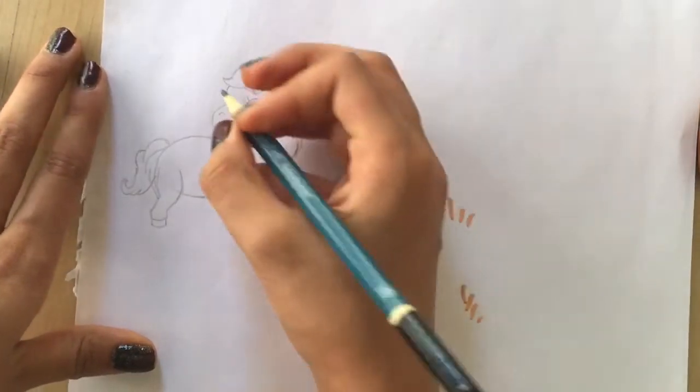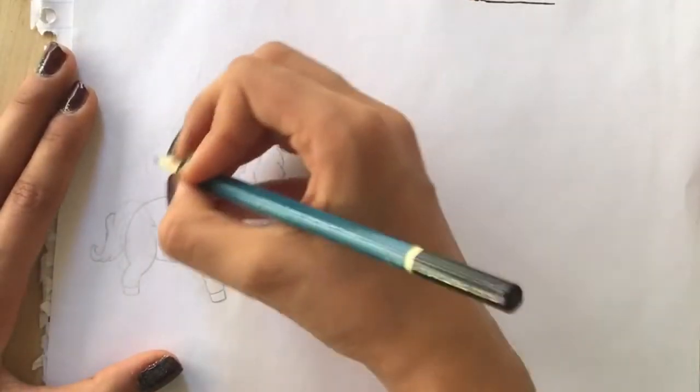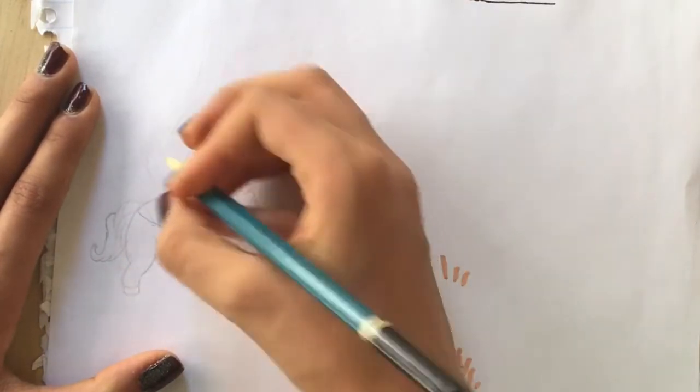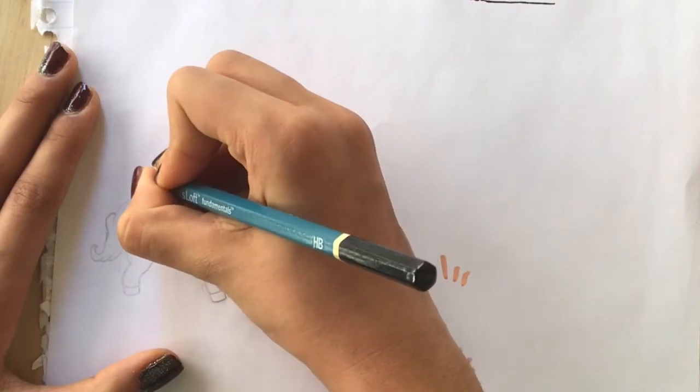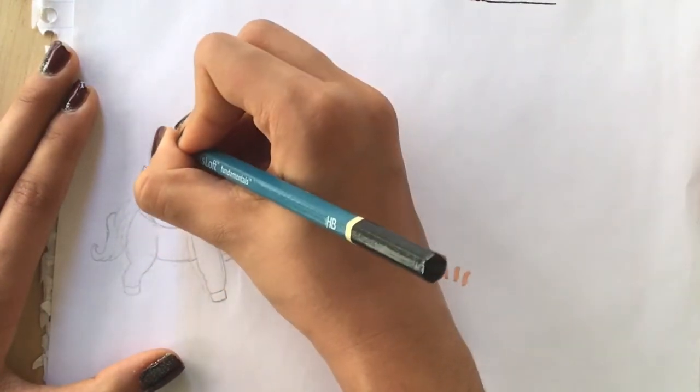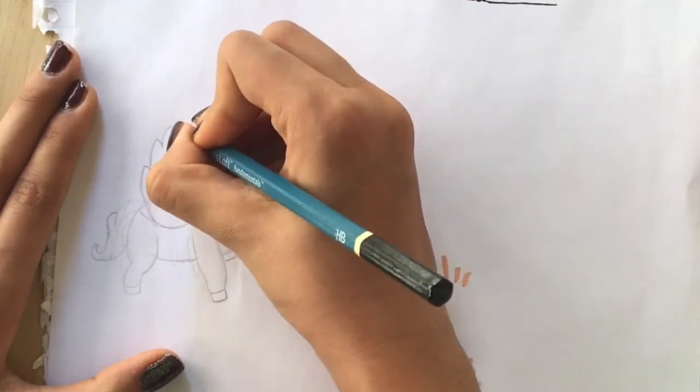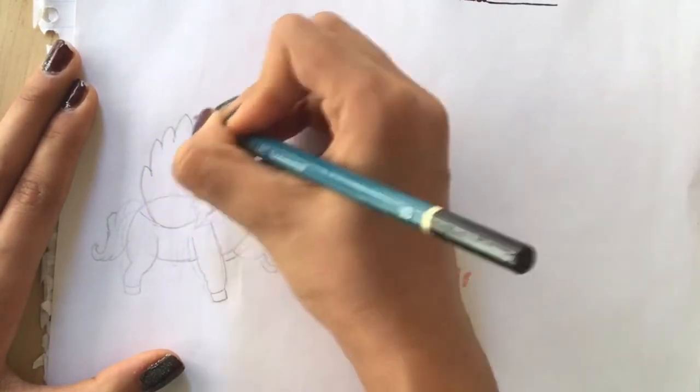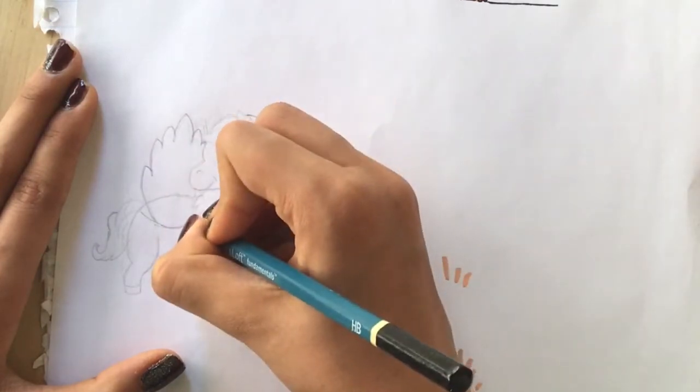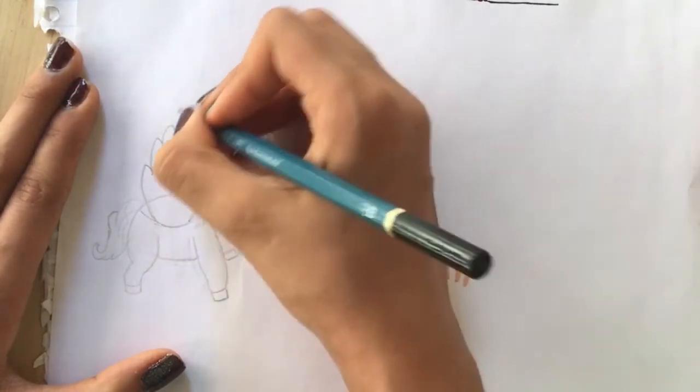And it's time for the wings. Start by drawing a curved line all the way up to the neck. Start drawing kind of like a leaf shape, point it towards the top, and then bring it down and connect it there.